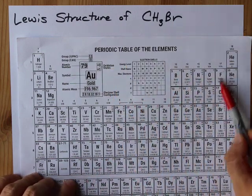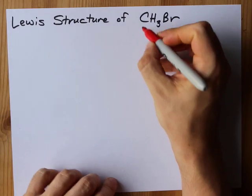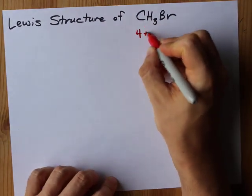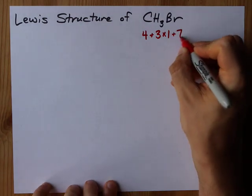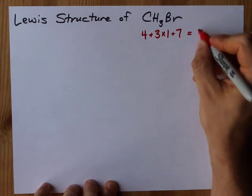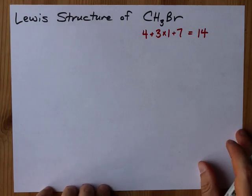And bromine, as a halogen, will bring 7 electrons each. So let's count those up, 4 for carbon, 3 ones for the hydrogen, and 7 for the bromine. Add those up, I get 14 valence electrons.